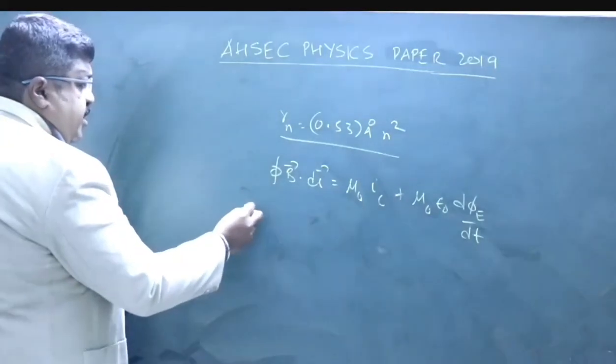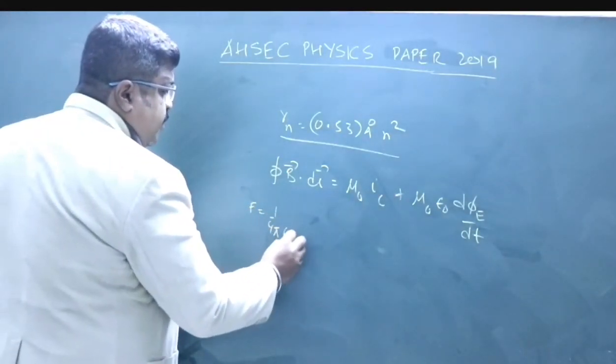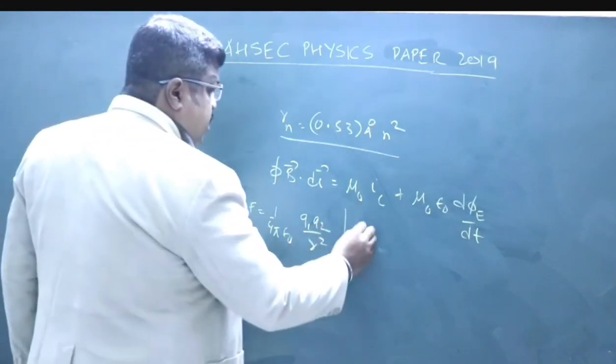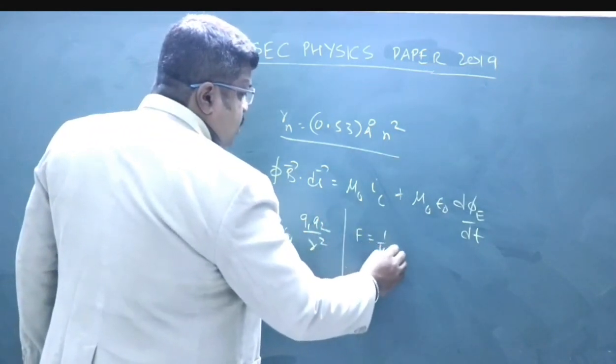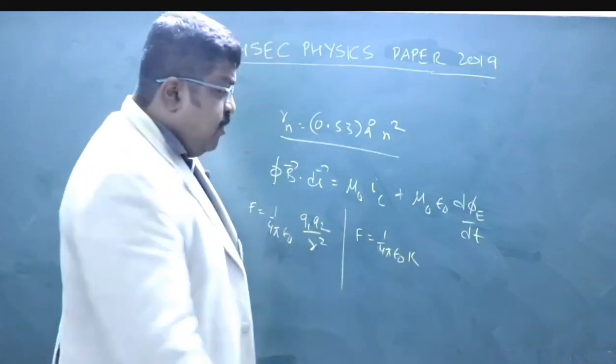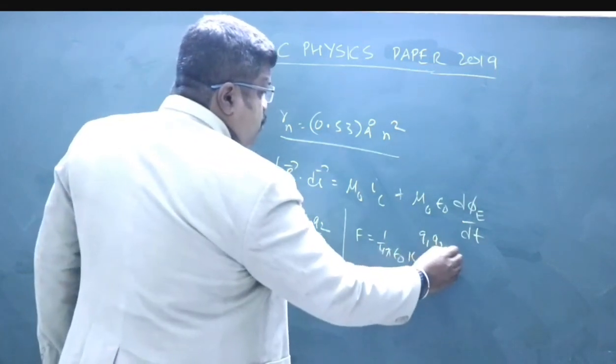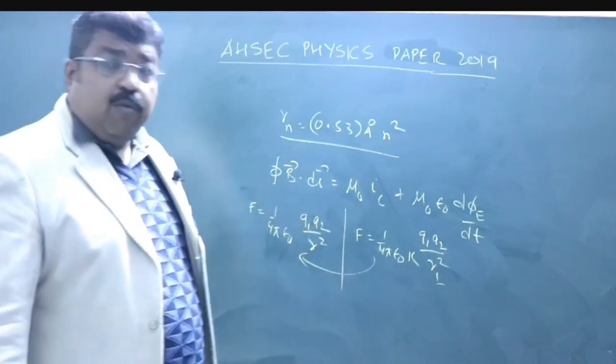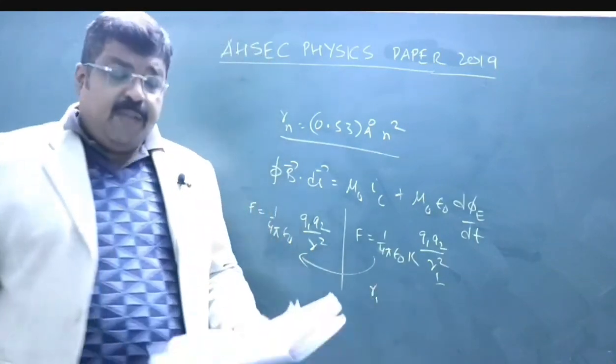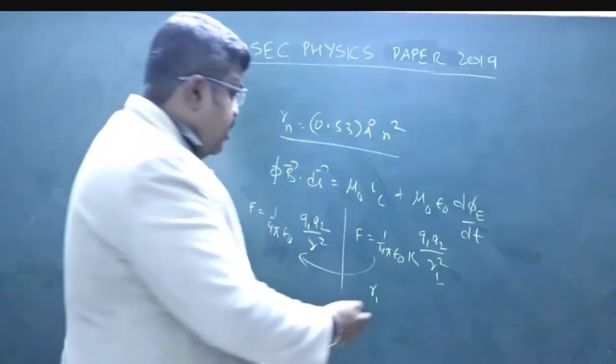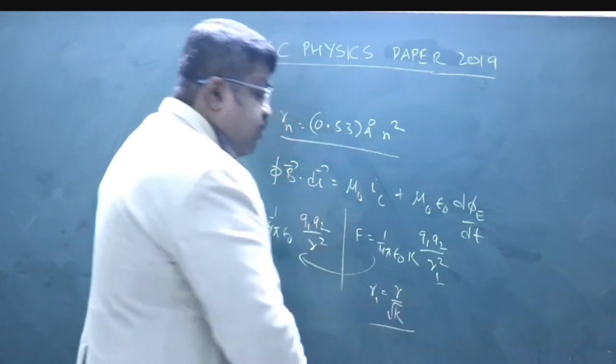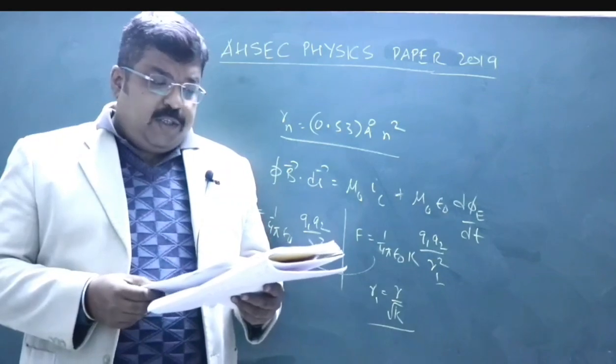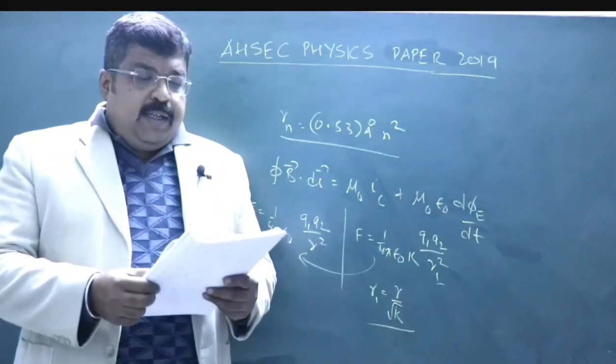What distance will these charges experience the same force in a medium of dielectric constant k? F equals 1 by 4 pi epsilon naught q1 q2 by r square. For same force in dielectric medium k, you equate these two. From that the value of r1 comes to be r by square root of k.